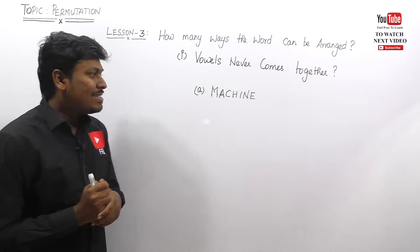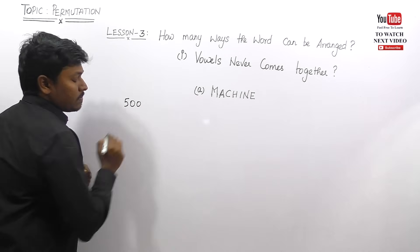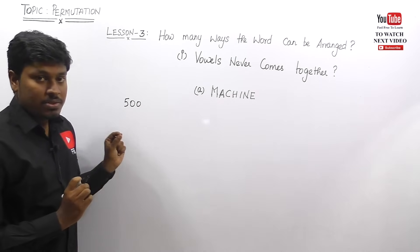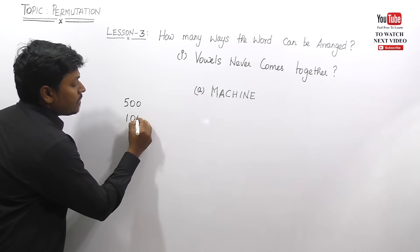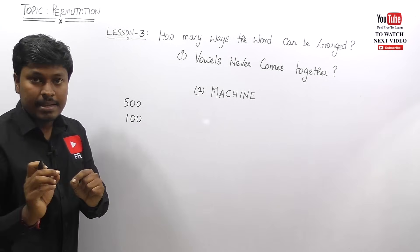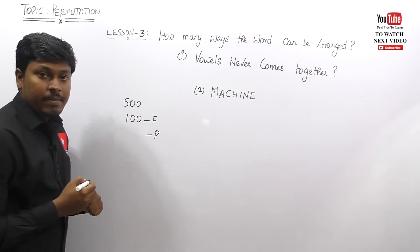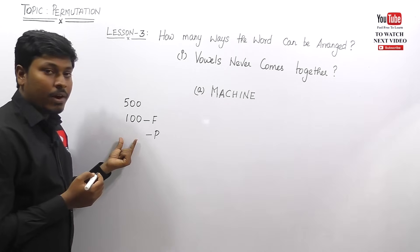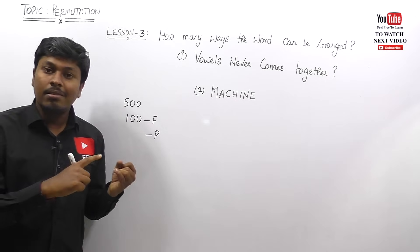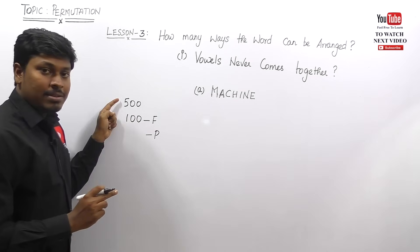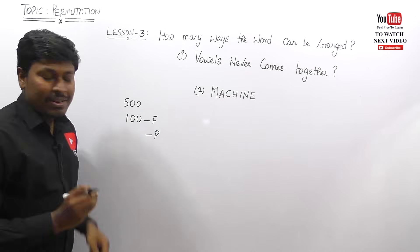Just understand a simple logic. Say 500 students are there in a classroom — just an example. Total 500 students, and 100 students failed. The number of students who passed will be 400. You don't need any formula to calculate this — just total students minus failed students equals passed students. Apply the same logic here.